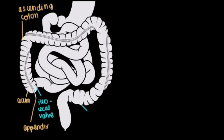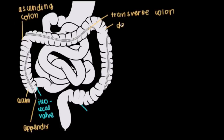After the ascending colon, we run transversely. The part of the large intestine that continues after the ascending colon is called the transverse colon — another great descriptive name because it runs transversely. Then next we get into the descending colon, which descends downward.